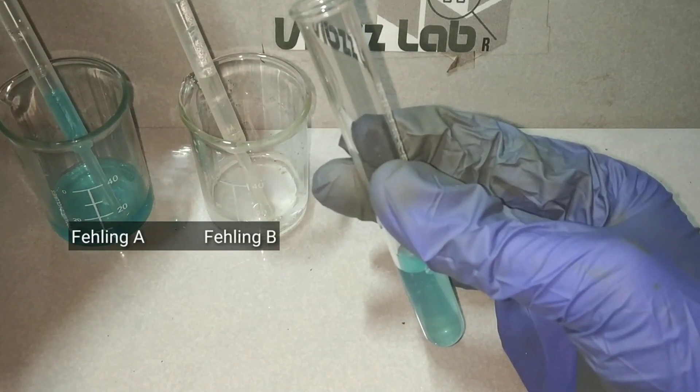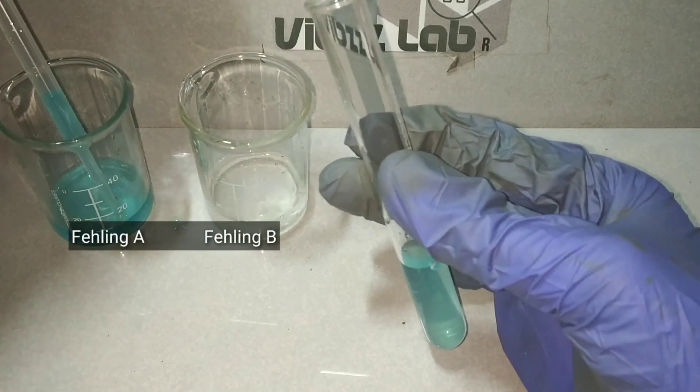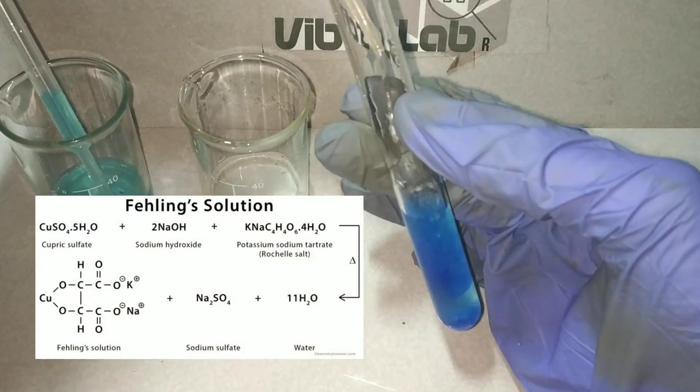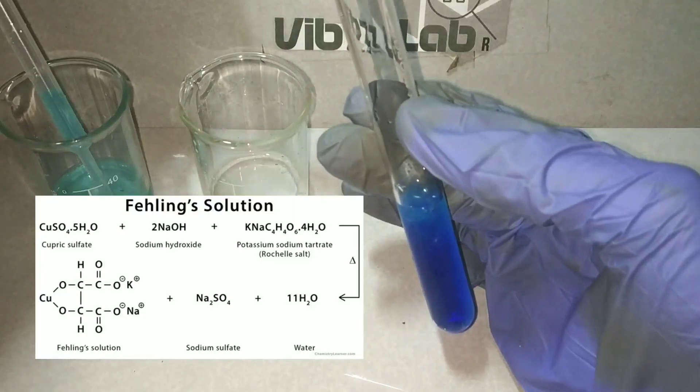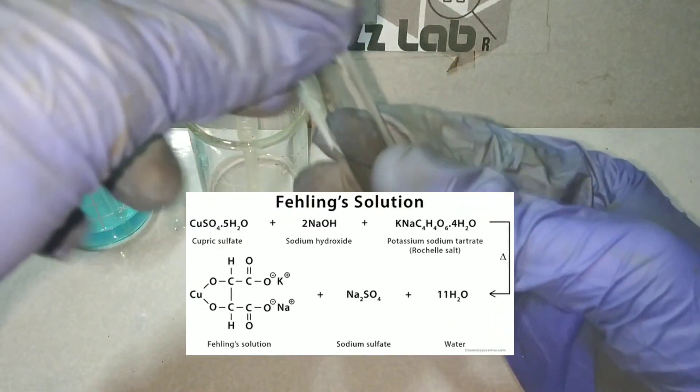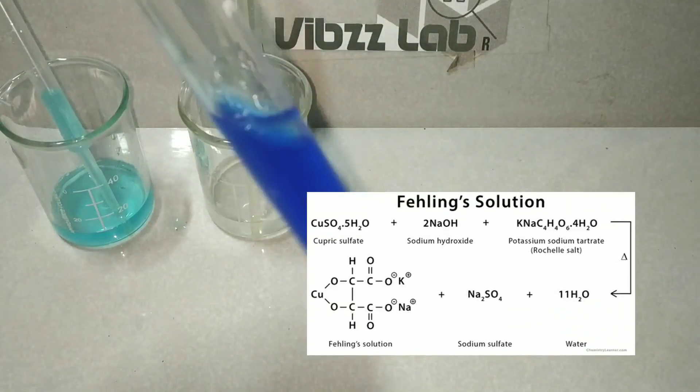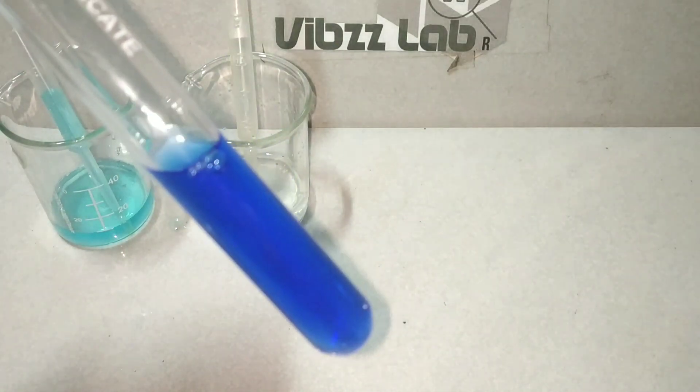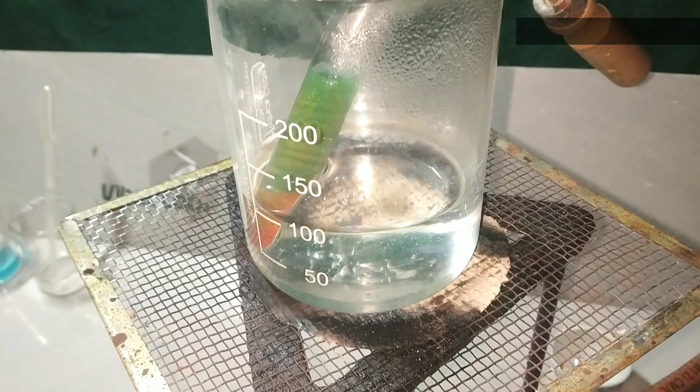Fehling reagent is formed when both the solutions A and B are mixed. We cannot pre-mix and store this product as it is not stable for a long time. The complex formed is a copper chelate of sodium potassium tartrate called Bis-Tartarito-Cuprate-2. This is an oxidizing agent which has deep blue color.